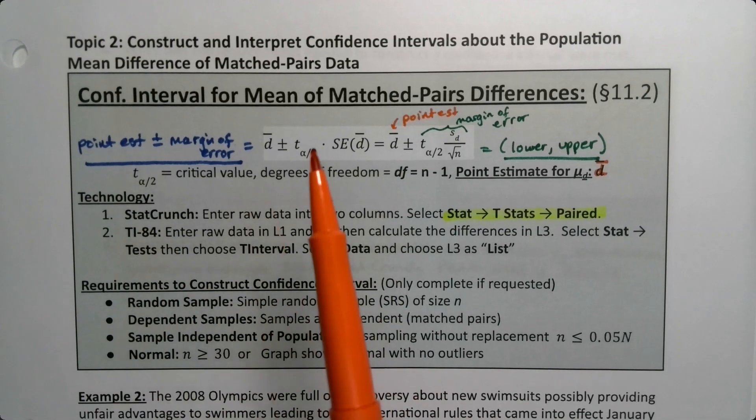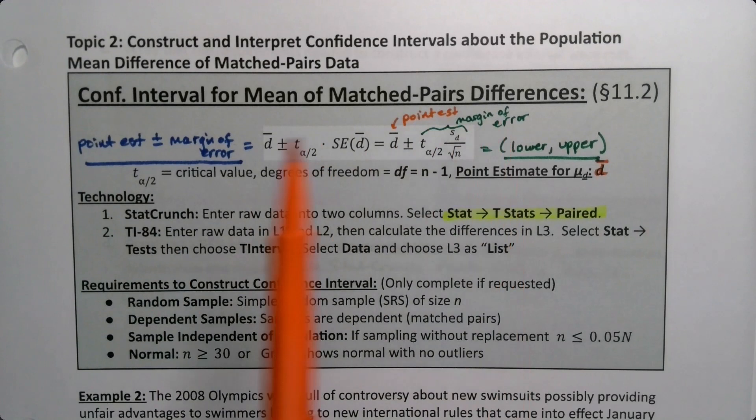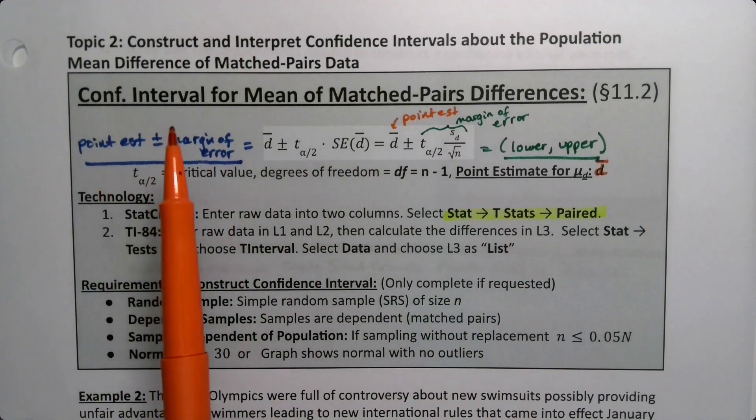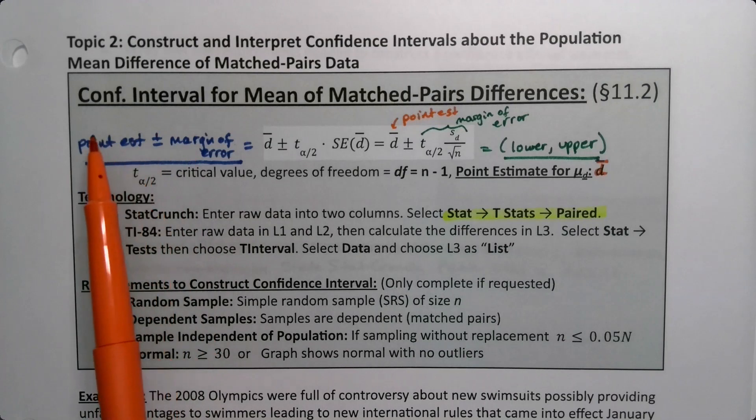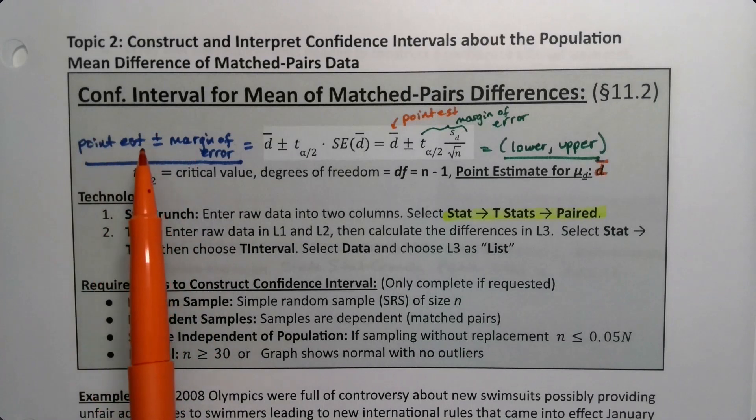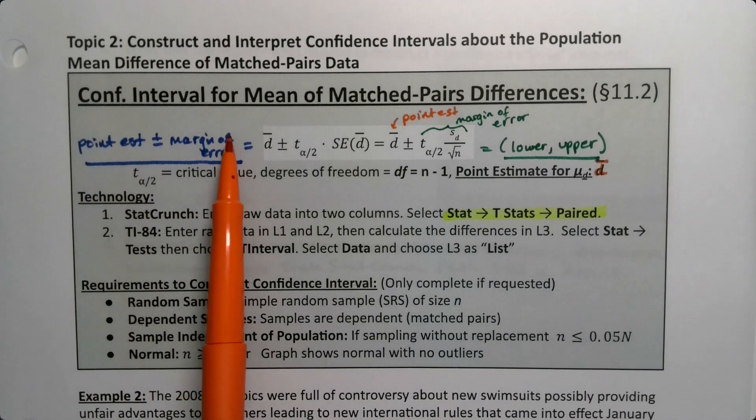Since we can conduct a hypothesis test for the mean of matched pairs differences, we can also construct a confidence interval for that same mean. It never hurts to remind ourselves of the basic idea of a confidence interval, which is that you take a point estimate and you add and subtract your margin of error.